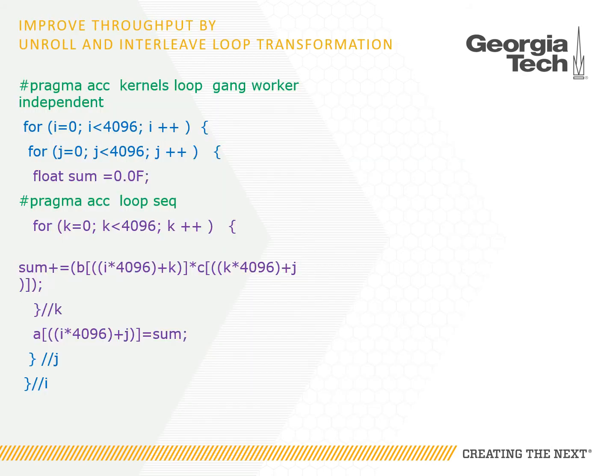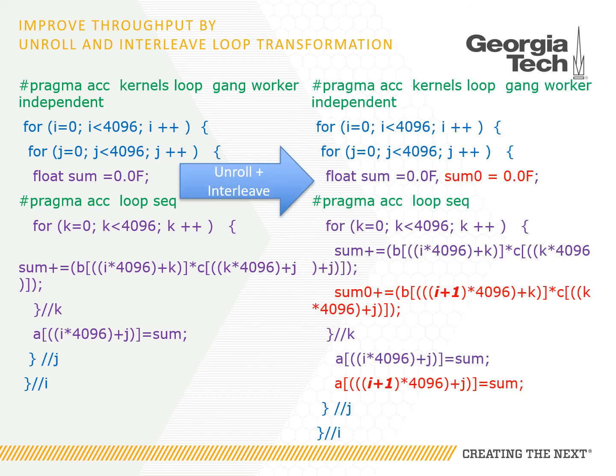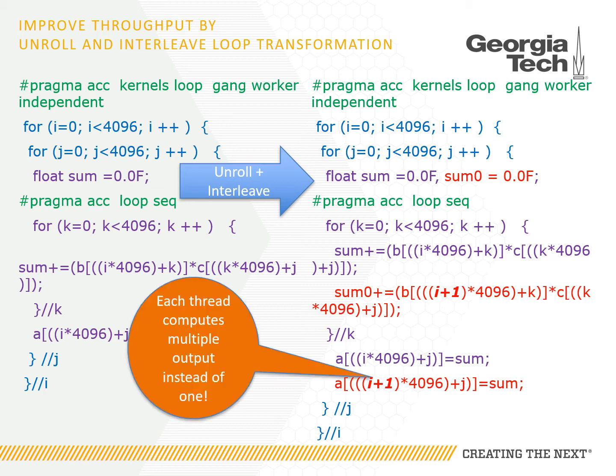This is an OpenACC matrix multiplication kernel, and we use the loop unroll and interleave transformation to improve the memory bandwidth utilization. This is a generalization of the thread coarsening transformation, and after unroll and interleave, it increases the amount of work being done in each thread.